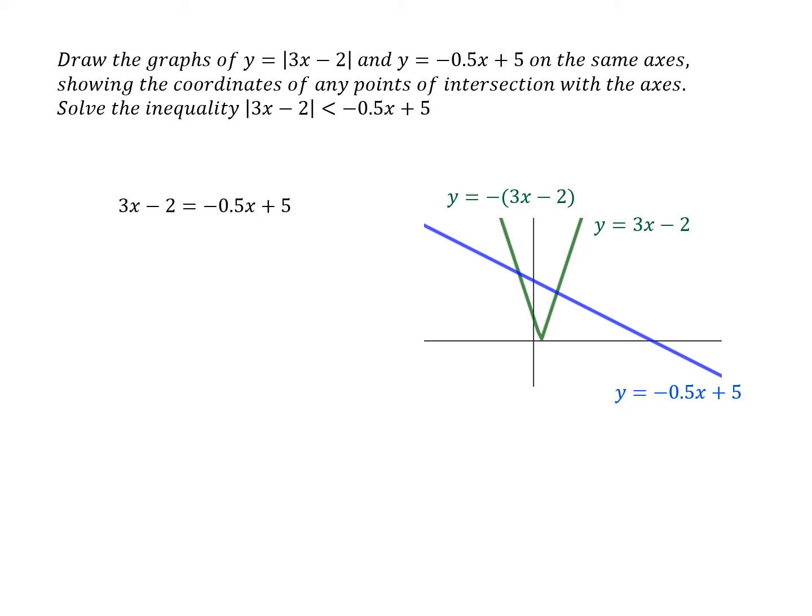The first point of intersection is this one, and that's solving this linear equation here. And then we get that value for x. We only need the x coordinate. We're not interested in the y coordinate.